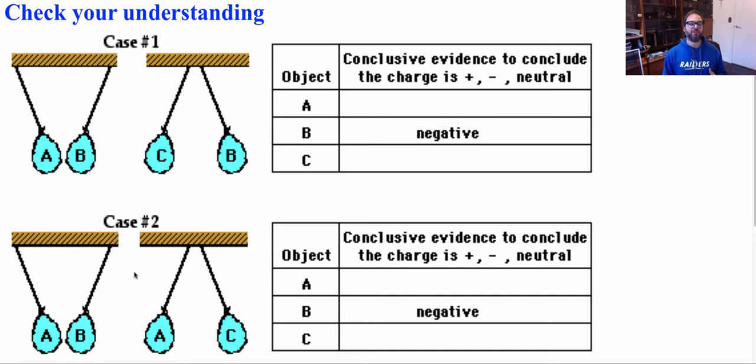And then I want you to do the same thing for case two. Except in case two, A and B attract and here we have A and C repel, and we know here that B is negative. Can you figure out the charges of A and C? Pause the video and see if you can solve that.